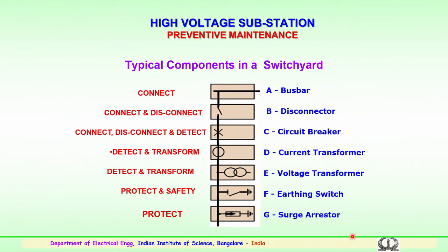We have discussed earlier various important components like the bus bar, disconnector, circuit breakers, current transformers, voltage transformers, the earthing switches and surge arrestors. These are the various components in any typical switchyard of an EHV or any high voltage HVAC or HVDC substation. We will look into the various functions of these components which are installed in any substation.